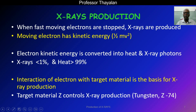This X-ray photon energy also involves heat. In terms of percentage, less than 1% of the energy is converted into X-rays, whereas greater than 99% is converted into heat. The basis of X-ray production is the interaction of electrons with the target material. The target material's atomic number is very important, as it controls X-ray production. In general, X-ray tubes use tungsten as the target material because it has a high atomic number of 74.